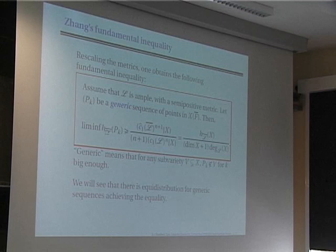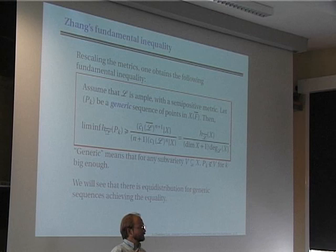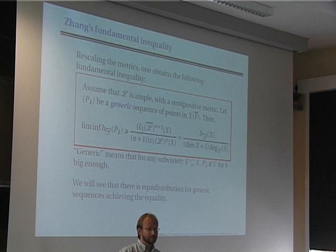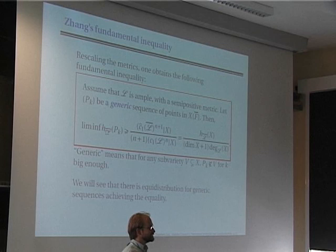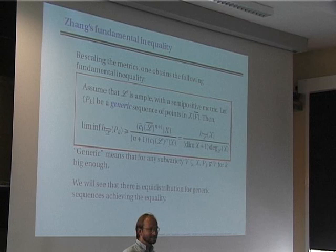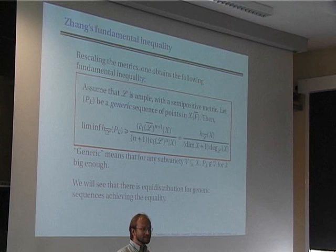Now what one can do: it is unlikely that a given line bundle will give a positive height to the variety. For example, if I look at a polarized dynamical system, the height of the variety is zero because the variety itself is preperiodic. So the hypothesis that the height is positive is not satisfied in practice. But what I can do is rescale the metric — multiply it by a fixed number — and then compute the new height of the variety; for some values of the scaling the height will be positive.